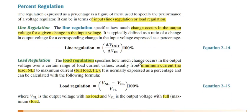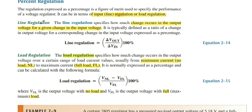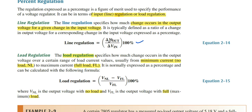Percentage of line and load regulations. There are two types of regulation: line regulation and load regulation. Line regulation is given by the equation: line regulation equals output voltage divided by input voltage, multiplied by 100, which gives the percentage line regulation. The load regulation specifies performance using minimum voltage current and maximum voltage current, or maximum load or no load, and we get it from this formula.